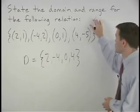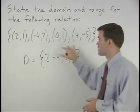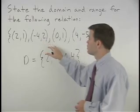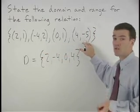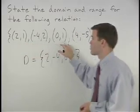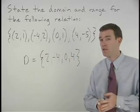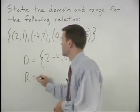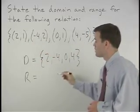The range is the set of all y-coordinates for our ordered pairs. So in this case, our range is 1, 2, 1, and -5. Notice that the y-coordinate of 1 is repeated in two of our ordered pairs. In this situation, we only need to mention it once in our range. So our range, or R, is {1, 2, -5}.